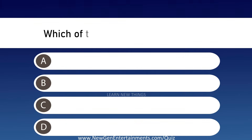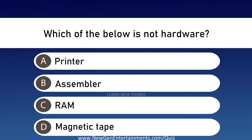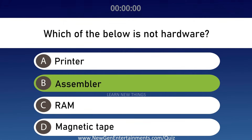Which of the below is not hardware? Options are A: Printer, B: Assembler, C: RAM, and D: Magnetic Tape. Answer is Option B, Assembler.